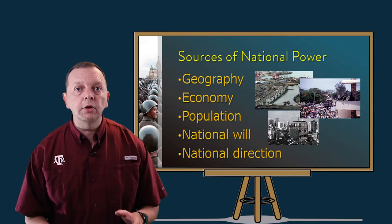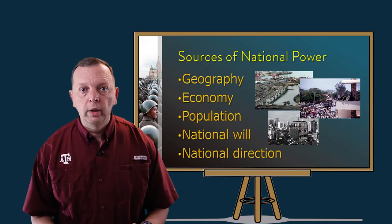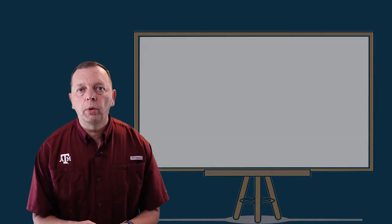The people of a country are also important for another source of national power: national will. National will speaks to the support that a population gives to its government and to the government's objectives. For a country to sustain military operations against another country, the government needs the support — or at least the lack of opposition — of its people. However, if the government lacks that national will, it may find itself unable to support this use of power.